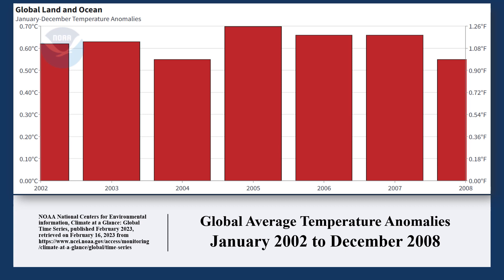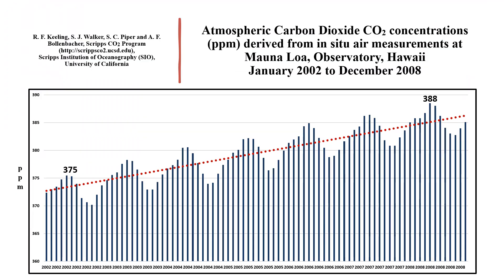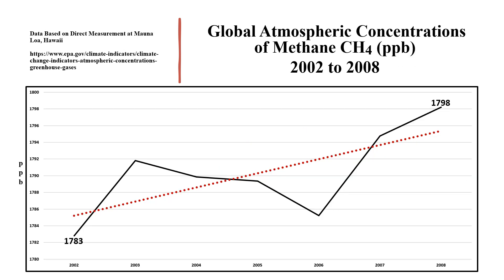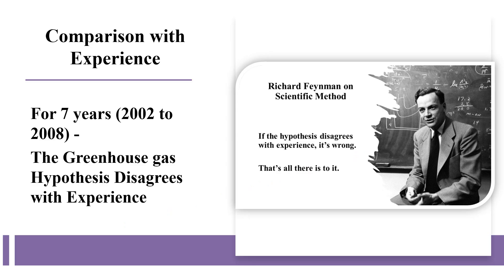The final 23 years up to December 2022 produces a mixed result. For the seven years 2002 to 2008, there was a cooling global temperature trend of minus 0.02 degrees Celsius per decade. But during the cooling trend, carbon dioxide concentration increased, methane concentration increased, and nitrous oxide concentration increased. Once more, the greenhouse gas hypothesis disagrees with experience.